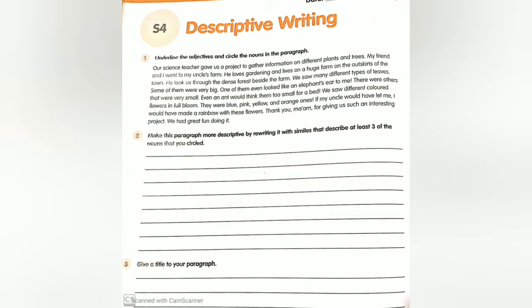Our science teacher gave us a project to gather information on different plants and trees. Circle: project, plants, and trees. My friend and I went to my uncle's farm. Circle: friend, uncle's farm. He loves gardening and lives on a huge farm on the outskirts of the town. Circle: outskirts and town. He took us through the dense forest beside the farm. Circle: forest and farm; underline: dense.